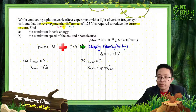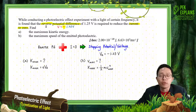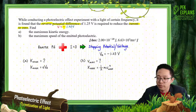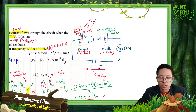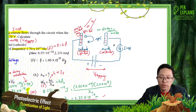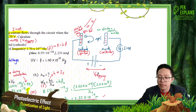Why do we reverse the voltage? To stop the electron — stop the electron from reaching the anode. If you look at my previous video, this is the stopping voltage. We try to repel the electron so that none of the electrons can reach the anode. When none of the electrons reach the anode, no electron flows in the circuit, so the current becomes 0.